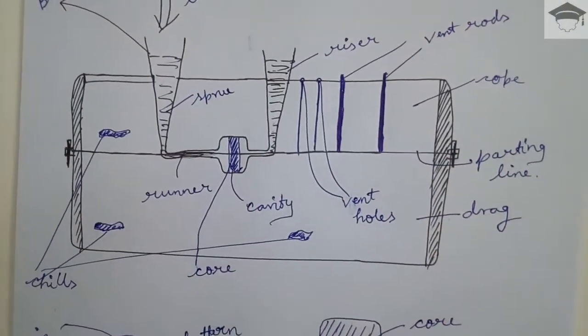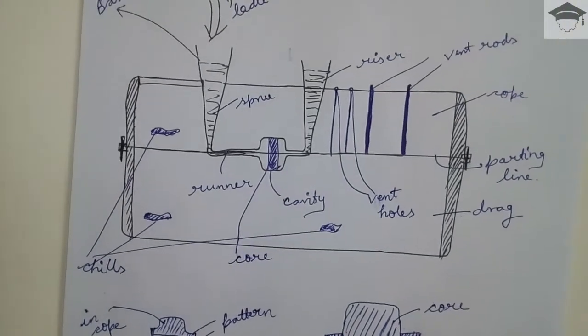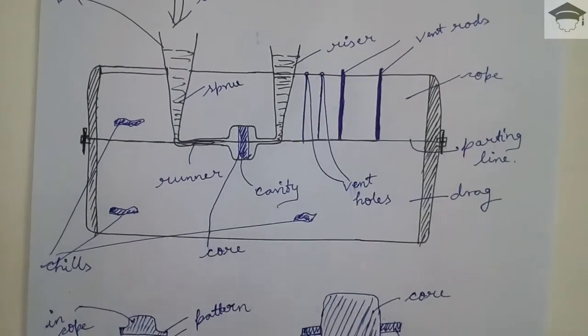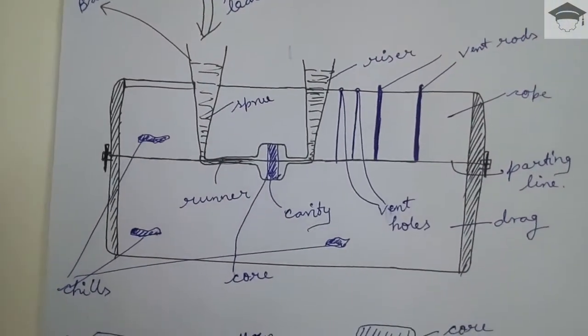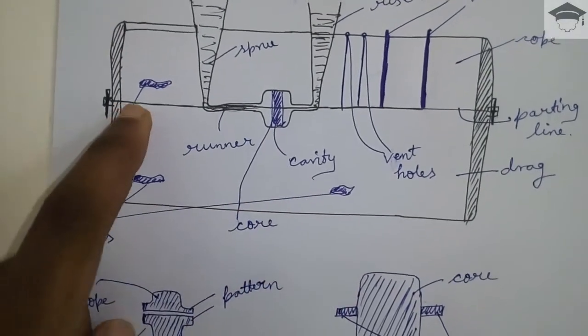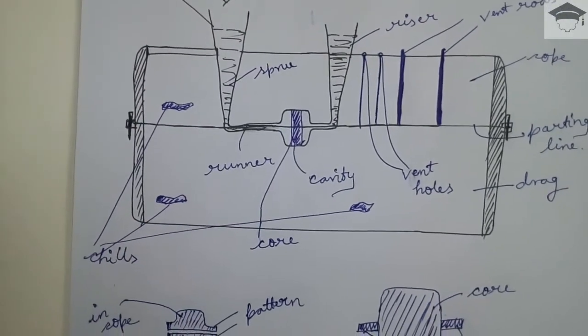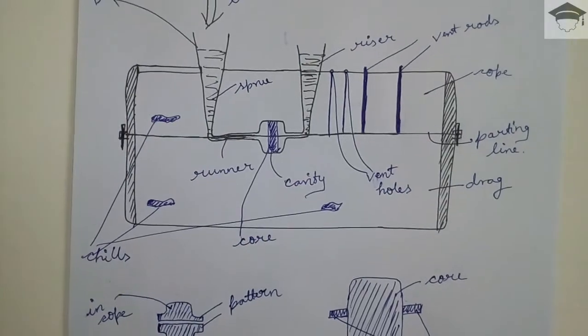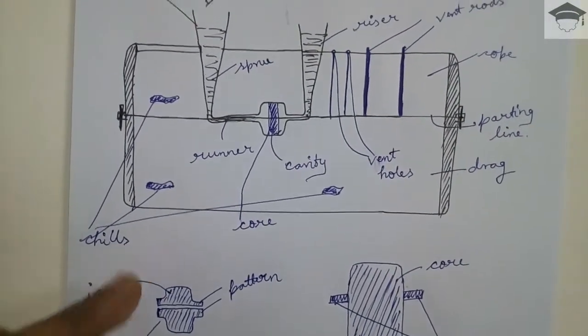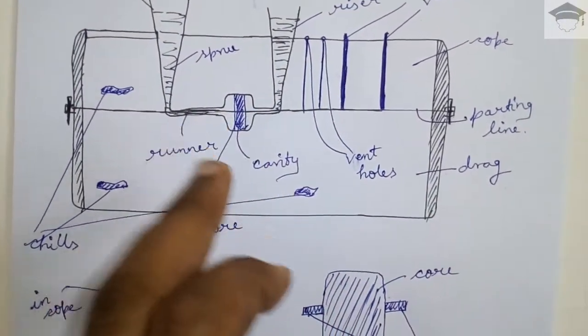And the cope and drag are usually made of sand - silica sand - and the sand can be dry or wet. Now wet sand is known as green sand. Then these are the chills - they are metallic components that are placed in the sand in cope and drag both regions in order to ensure faster solidification. Chills carry away the heat so that it solidifies at fast time.